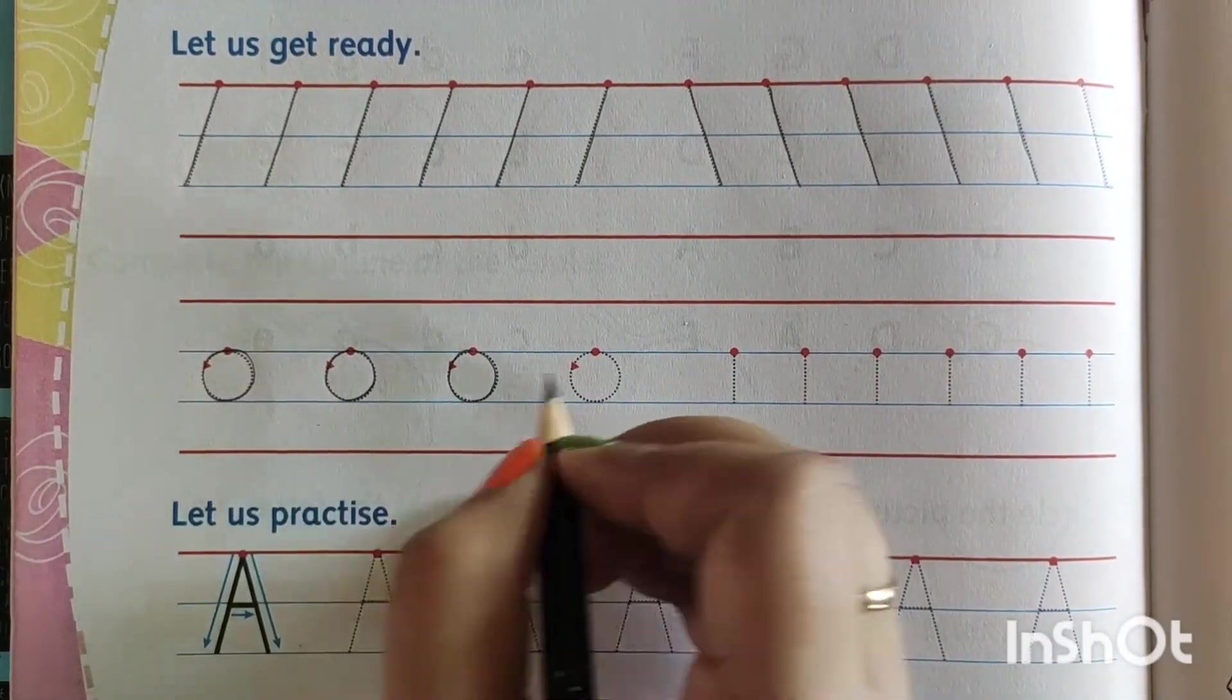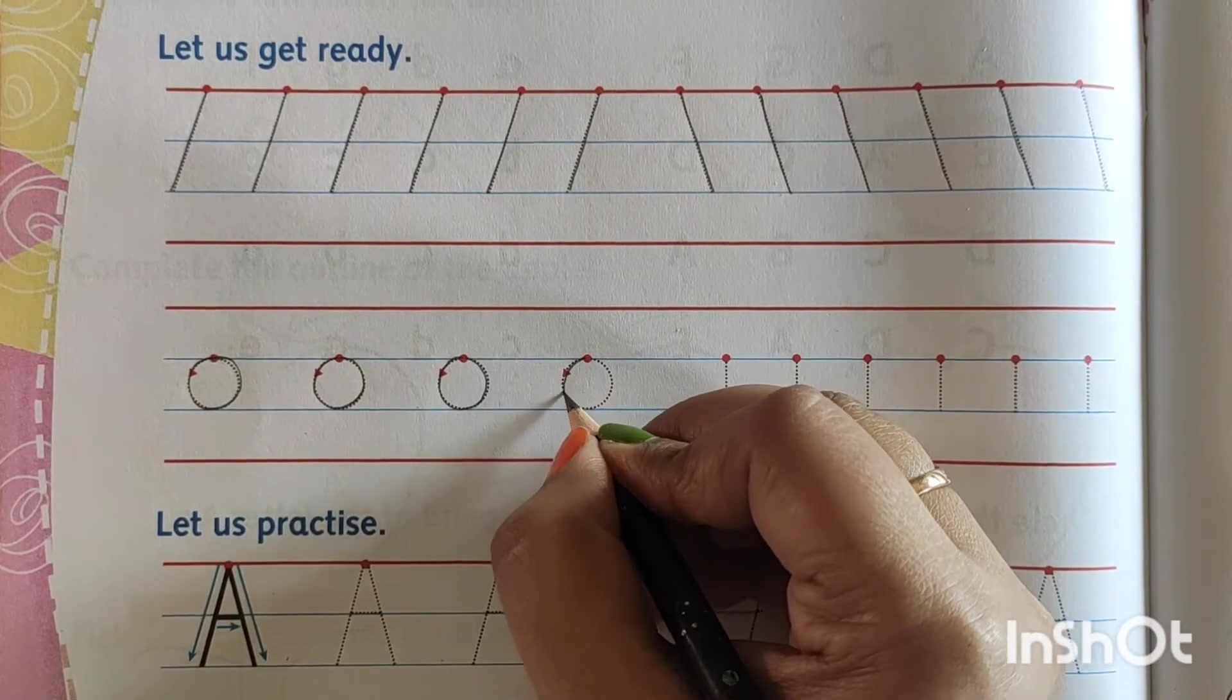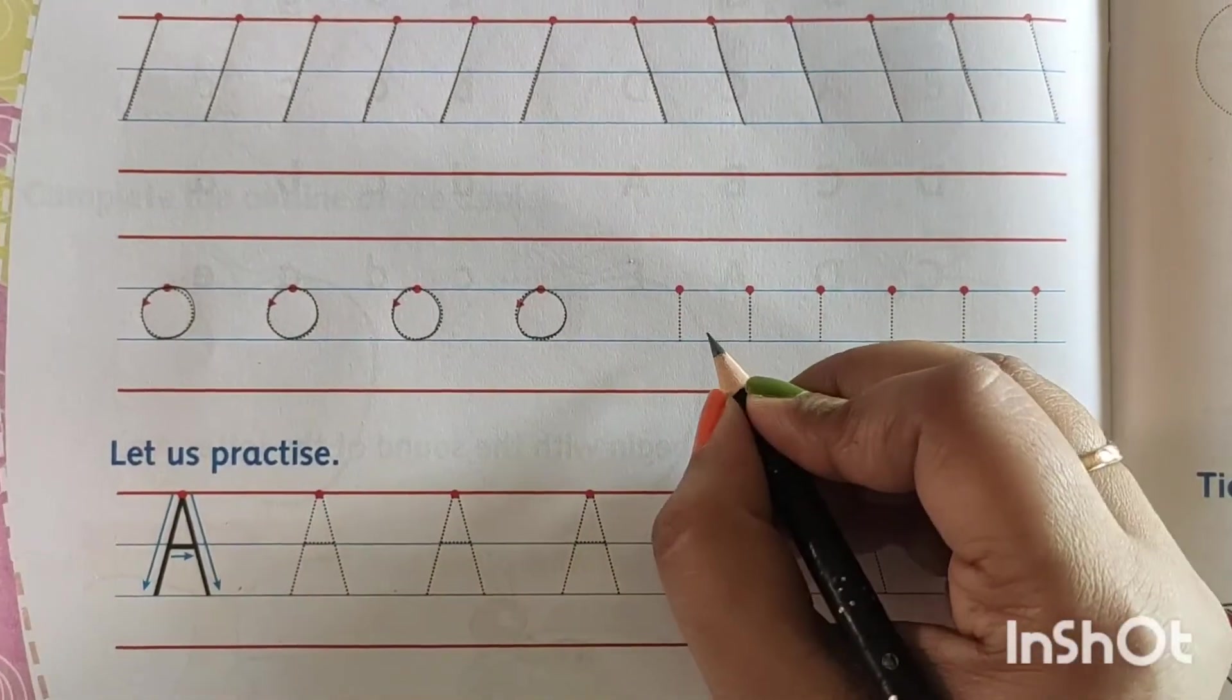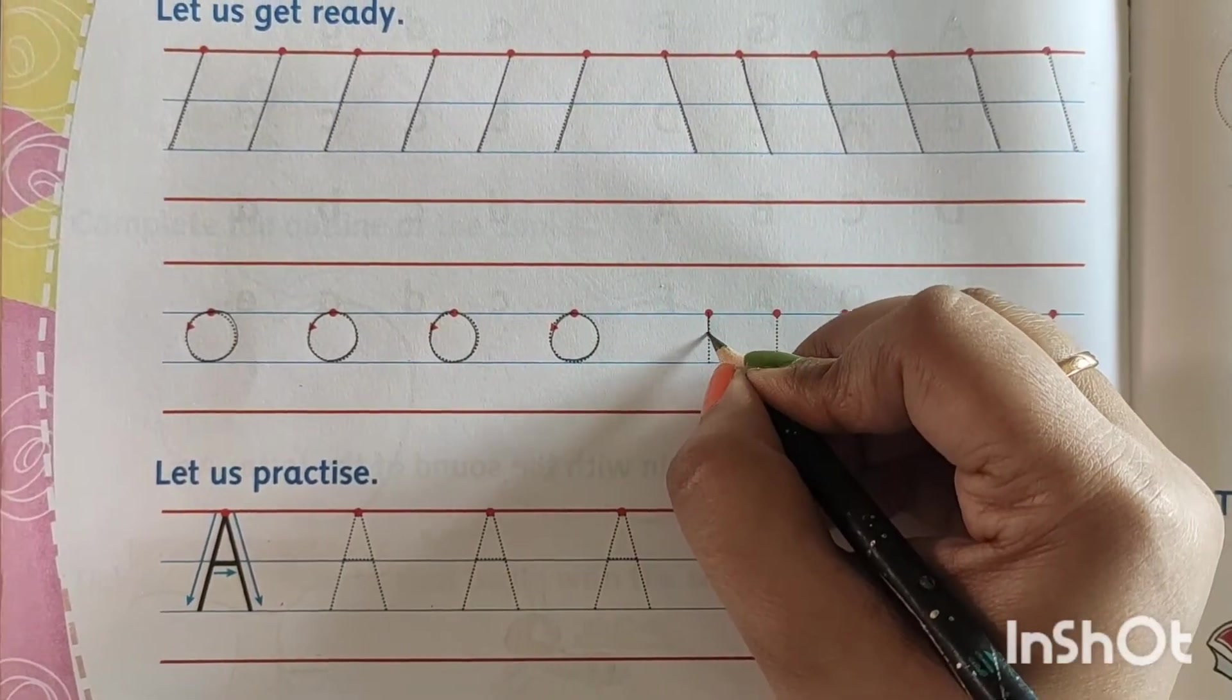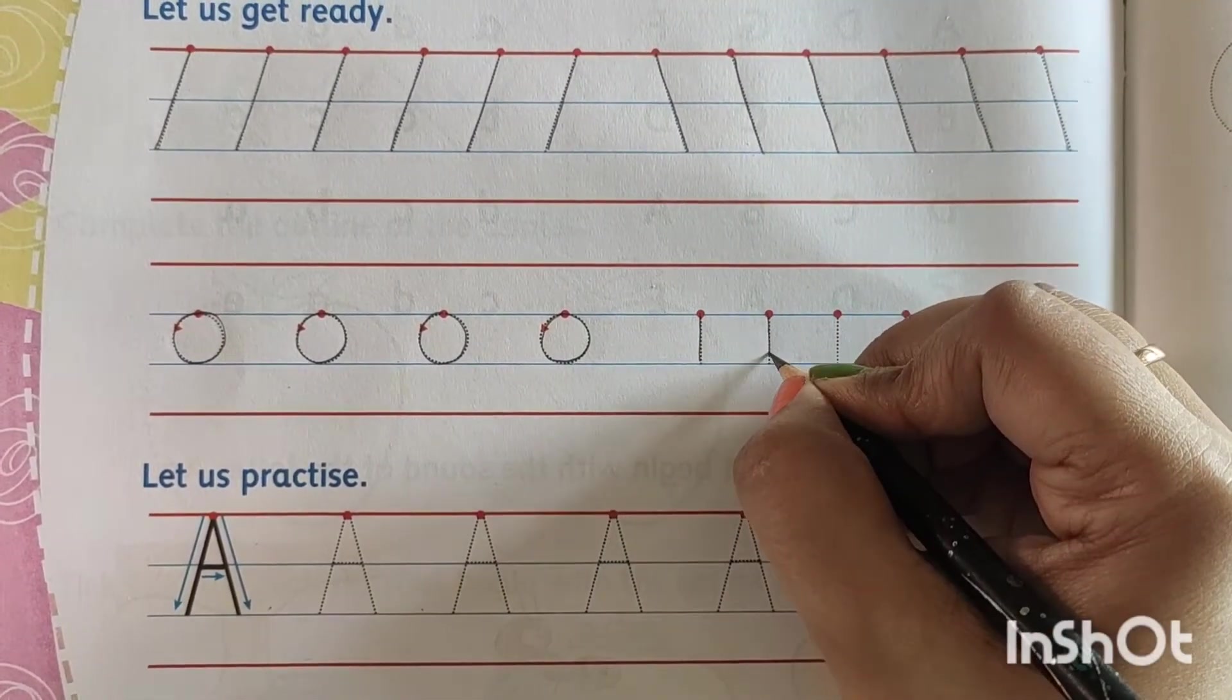One, two, three. Then this one is number four. Then these are standing lines. Yes, small standing lines.